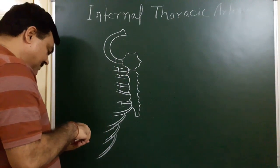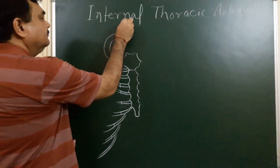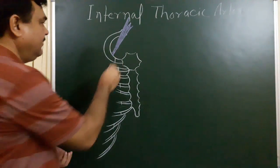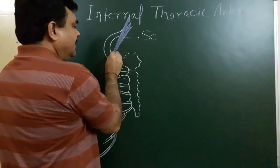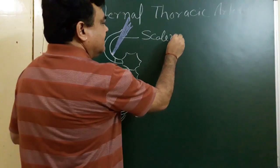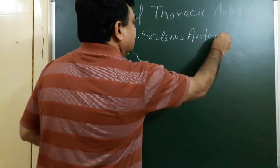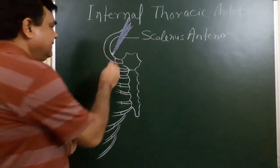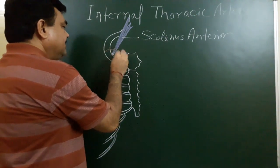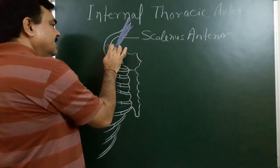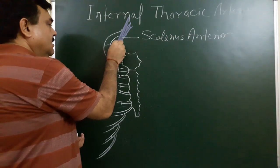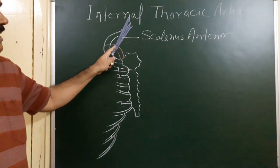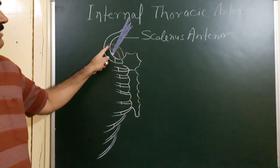This is serratus anterior muscle, this is serratus tubercle, this is serratus anterior muscle. This muscle divides the subclavian artery — this is the position of the subclavian artery — into three parts. The first part is proximal to this, the second part is deep to this, and the distal part is the third part.